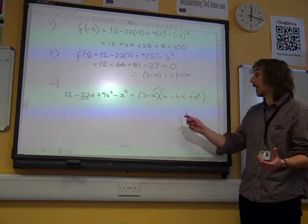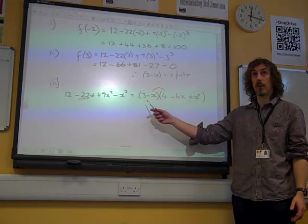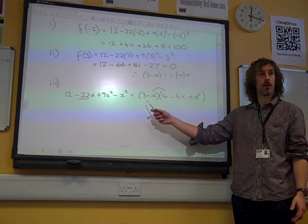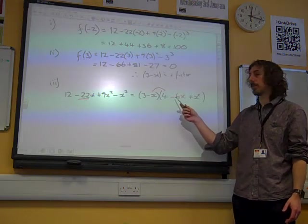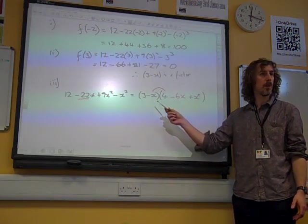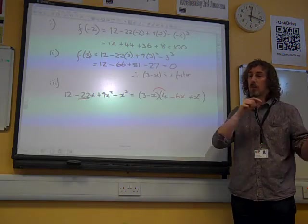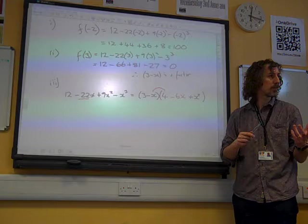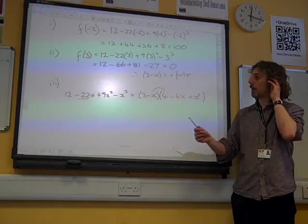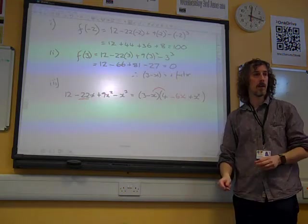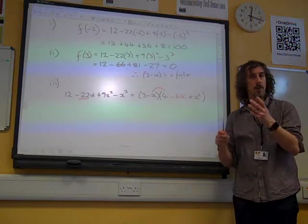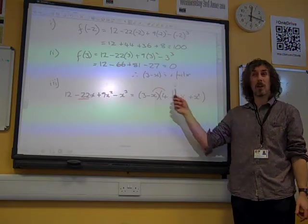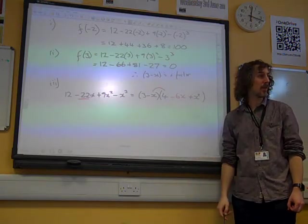And you end up with x minus 3, times x squared minus 6x plus 4. But you've lost your minus 1 out of the way there. And that now gives you a problem. So you've got to multiply the minus 1 into the bracket and then leave it with the minus 1 back in. But why not just do it that way? That's the simplest way of doing it.